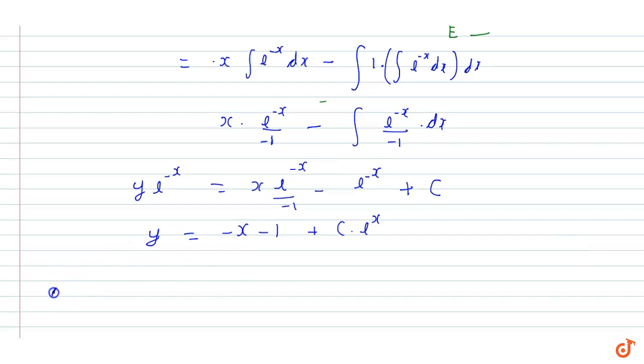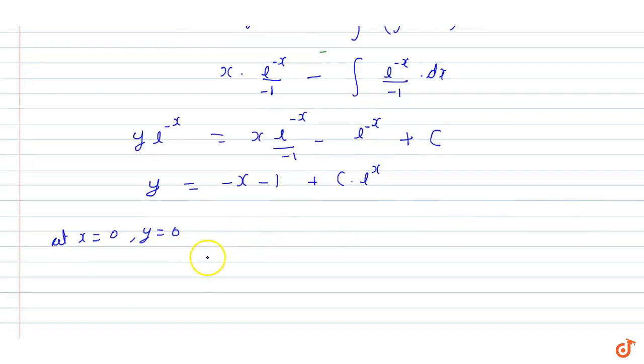And it is given that at x is equal to 0, y is equal to 0 because it passes from origin. So 0 equals 0 minus 1 plus c times 1, so we get c is equal to 1.